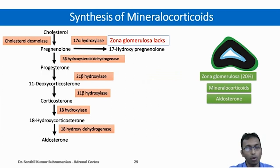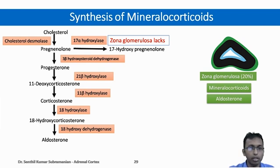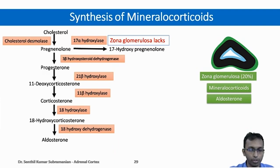Now coming to the synthesis of mineralocorticoids. Mineralocorticoids are synthesized from the outer zona glomerulosa layer, which constitutes 20% of the adrenal cortex. The predominant mineralocorticoid secreted in humans is aldosterone. In zona glomerulosa, the enzyme 17-alpha-hydroxylase is absent. Hence, the cholesterol moves in the direction of the mineralocorticoid synthesis pathway. Cholesterol is converted to pregnenolone, then to progesterone, which is acted upon by 21-beta-hydroxylase to form 11-deoxycorticosterone, then by 11-beta-hydroxylase to form corticosterone, then by 18-hydroxylase to form 18-hydroxycorticosterone.